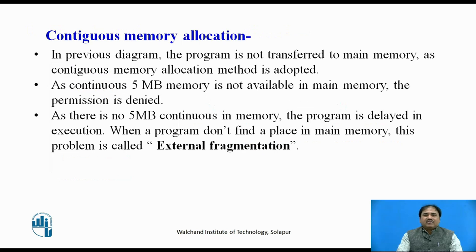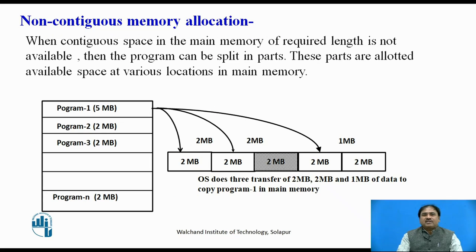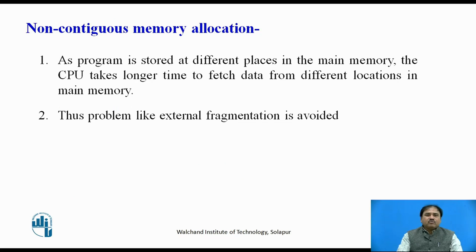To overcome external fragmentation, another type of memory allocation is possible: non-contiguous memory allocation. In this case, when the required contiguous space is not available in RAM, the program is split into different parts, and these small parts are placed in the available empty spaces. This way, a program can always find required space in the RAM, overcoming external fragmentation and ensuring the process is never delayed for execution. The drawback is that the CPU requires more time to access all the program parts stored in different locations, making it somewhat time-consuming. However, the big advantage is that external fragmentation is avoided.